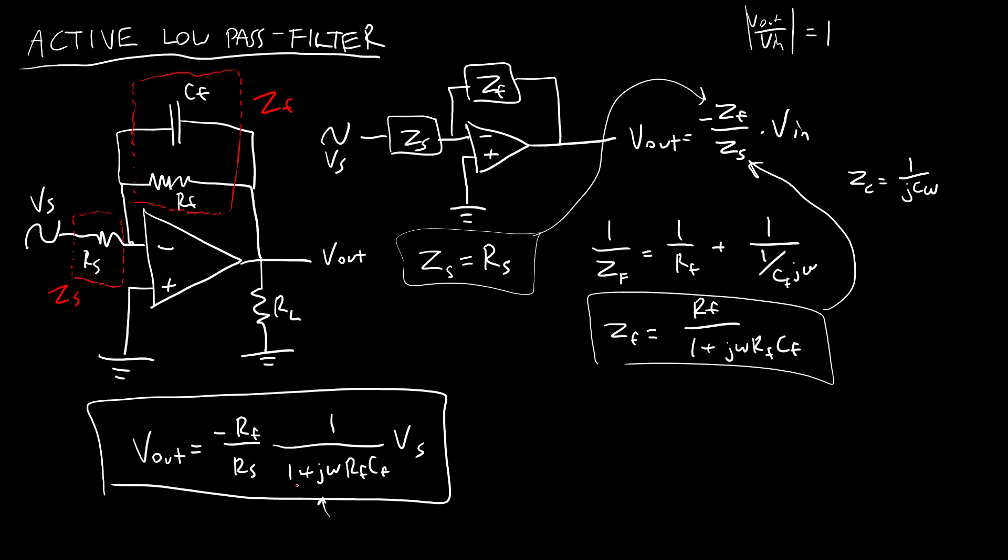Again, the point here being that for a passive low-pass filter, we pretty much just had this term. That should look kind of familiar. But now we have this gain term out front, where if we choose our feedback resistor to be greater than the source resistor, we can make the value of this fraction greater than one, therefore getting an output amplitude that is bigger than our input amplitude, having an active low-pass filter.